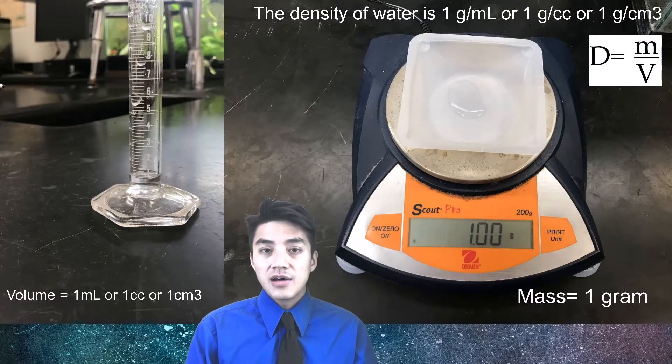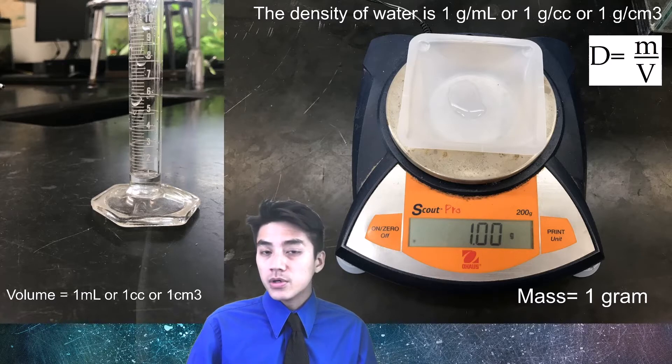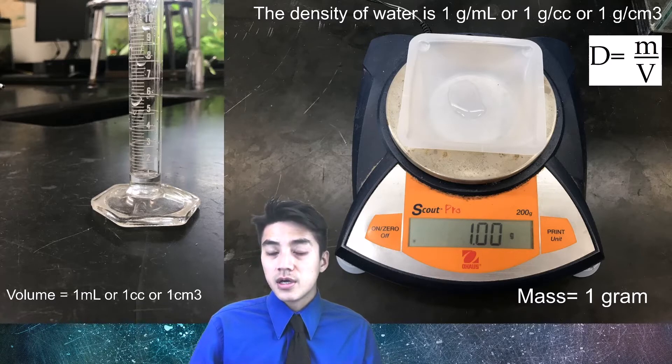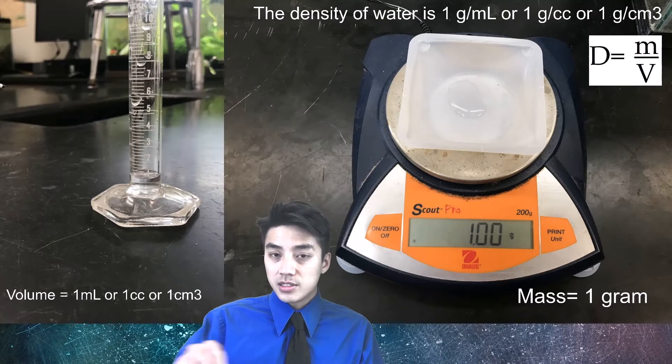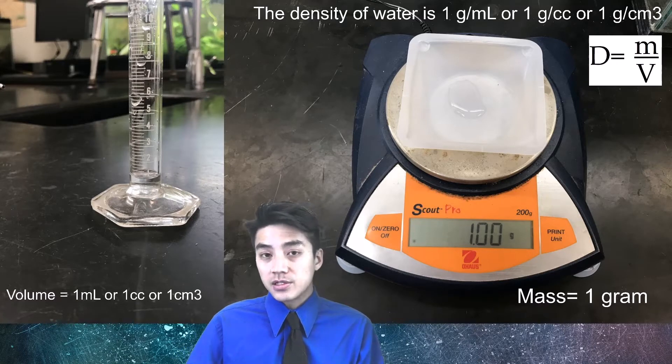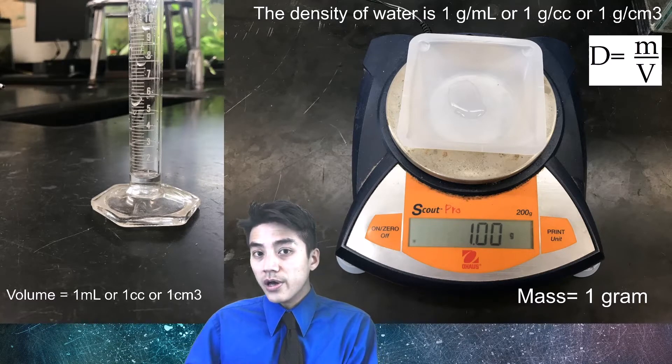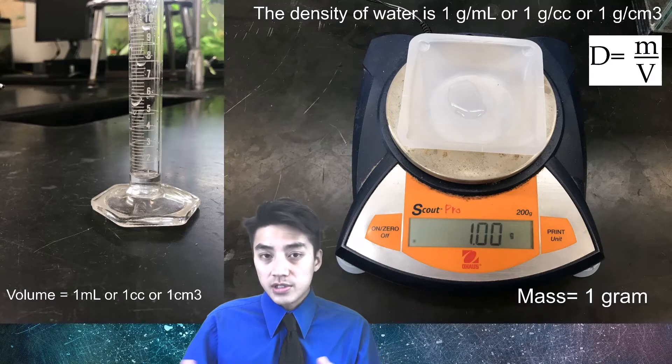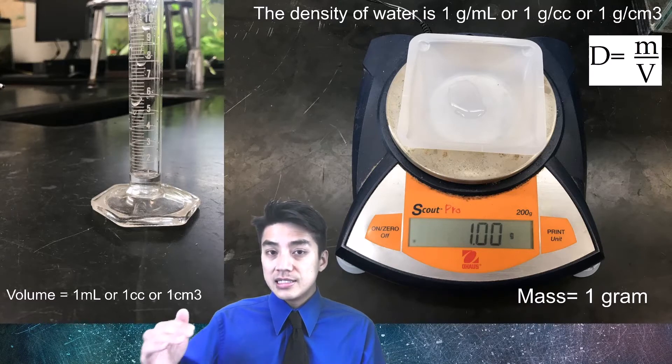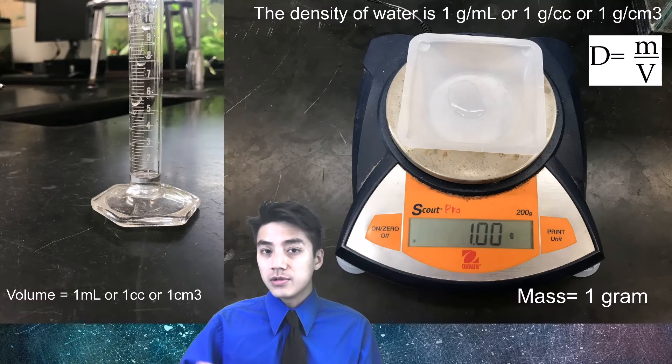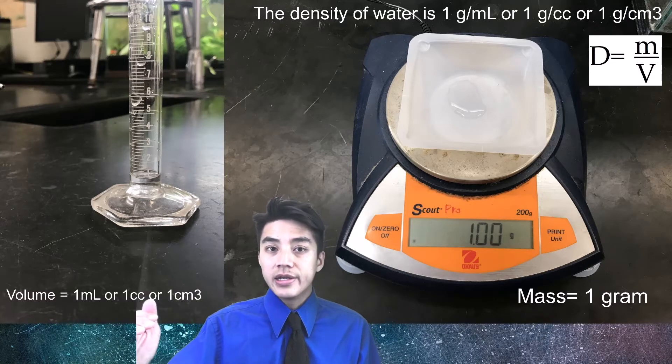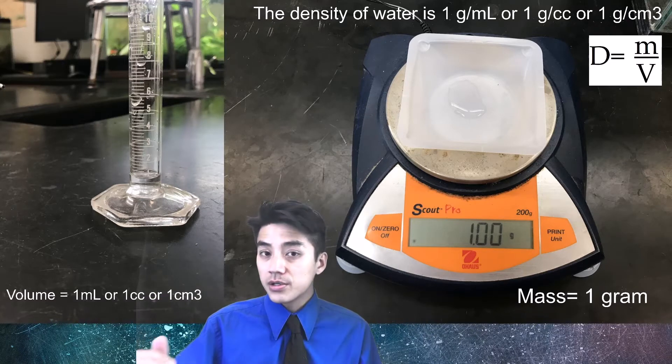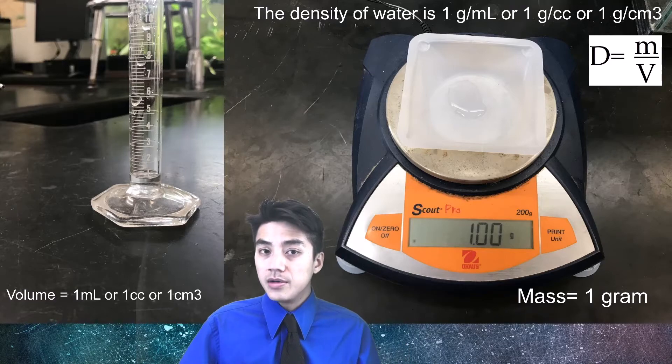On the left, I have a volume of 1 milliliter or 1 cubic centimeter. I poured that water onto the scale, and I got the water's mass, and it turned out to be 1 gram. If you take into account the formula again, density is mass divided by volume. If I take a mass of 1 and divide that by a volume of 1, I would just get 1 for the density of water.